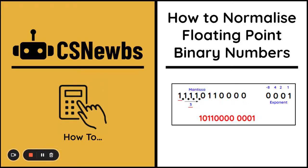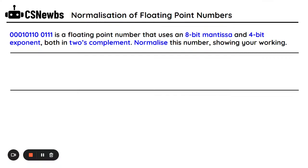This is a video to show how to normalize floating point binary numbers, and we'll be looking at both positive and negative numbers. This question uses an 8-bit mantissa and a 4-bit exponent.